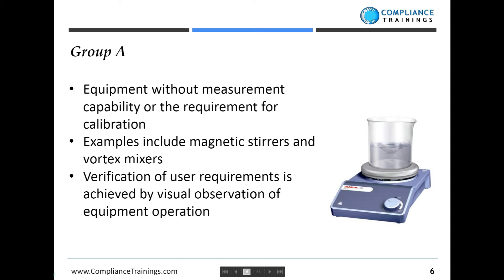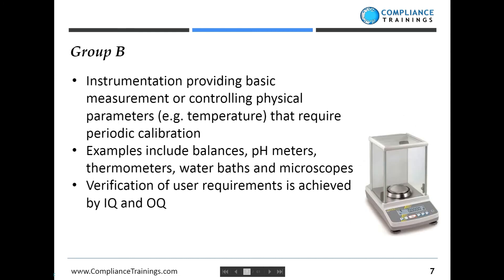Instruments in group A are the simplest laboratory instruments — things like magnetic stirrers and vortex mixers. Generally all we're required to do to qualify these is to check visually that they do what they're intended to do. For group B instruments we add a little bit of complexity. These are instruments designed to measure something, and they will require periodic calibration. For these relatively simple measurement instruments we would perform installation and operational qualification.